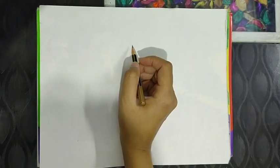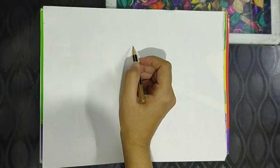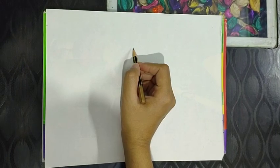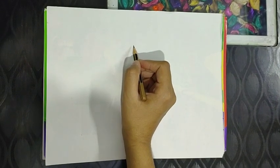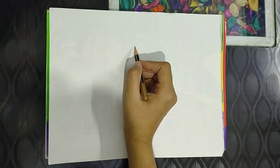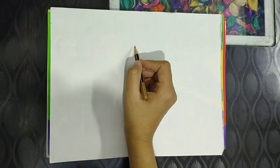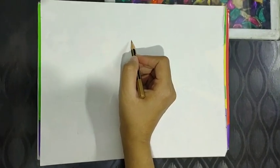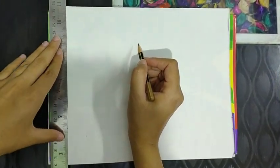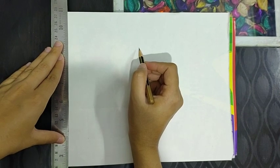Now firstly, we will draw the borders. For that, you have to keep two things in your mind. First, all the lines should be straight, and the width of all the borders will be of one scale. Like this. Place the scale on your sheet and then draw a straight line.